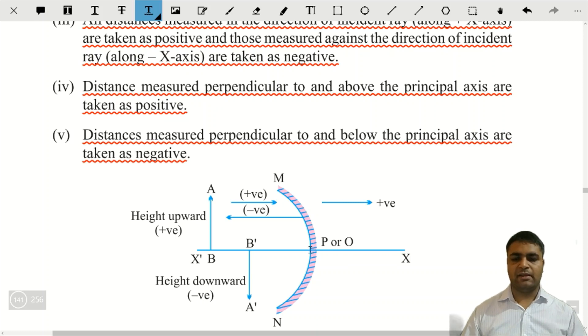Toh origin se left mein, kya hota hai, negative integers. Or origin ke right mein kya hota hai, positive integers. Origin ke oopar, positive integers, or origin ke neeche negative integers.